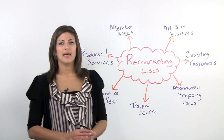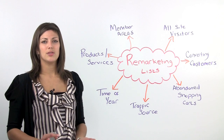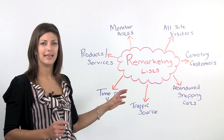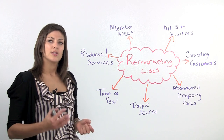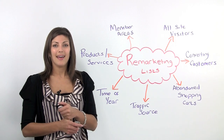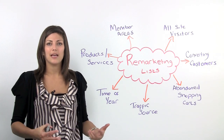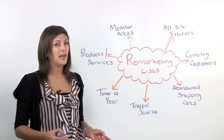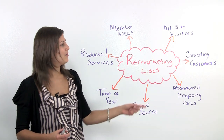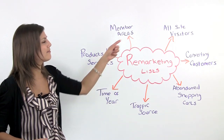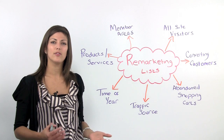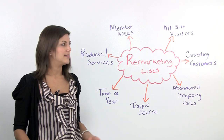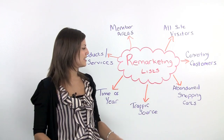So, converting customers. Whatever list you set up, you want to set up a list that's also going to be tagging your converting customers, so that you can either A, follow them with ads and try to upsell them or sell them a different type of service or product, and B, you can discount them out of every other list that you set up, because if they've already converted with you, you might not want to follow them again. So that's your converting customers.